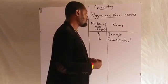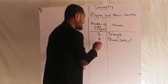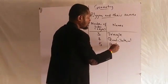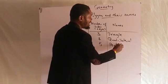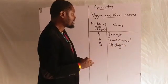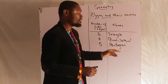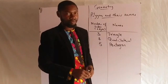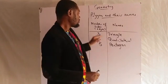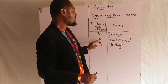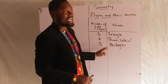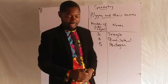Then we have the five-sided shapes — they are called the pentagon. Five-sided shapes are called the pentagon. So to recap: three sides is triangle, four sides is quadrilateral, five sides is pentagon.